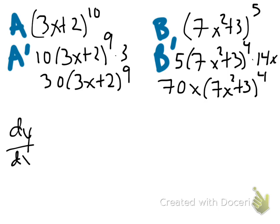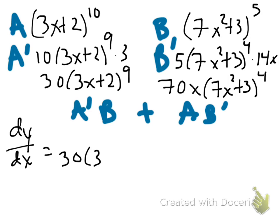dy dx, will be A prime B plus A B prime. So A prime is 30, 3x plus 2 to the 9th, and then my original B is 7x squared plus 3 to the 5th, and I will add that to A,